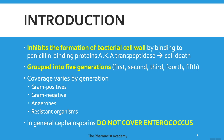The cephalosporins are grouped into five generations. Depending on the generation, you're going to have different coverages — you may have more gram-positive versus gram-negative in one generation, or you may have better coverage for anaerobes in another generation. Some of these agents cover resistant organisms, and those are the ones that you really want to pay attention to.